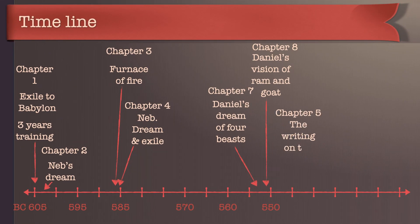In our timeline, chapter 5 would take place — and we're pretty confident here — in about 539 BC. So it definitely takes place after chapters 7 and 8. Chapters 7 and 8, if you remember, those visions took place early in Belshazzar's reign. Chapter 5 is going to be the last year of that.